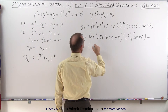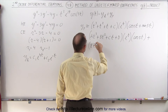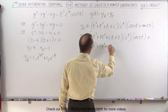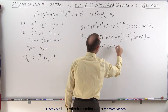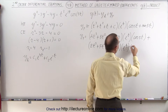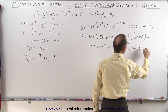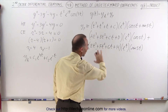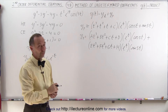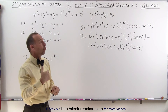So this becomes: e t cubed plus f t squared plus g t plus h, times e to the t power, times the sine of 5t. That means when we multiply all this out we're going to get eight separate terms with eight separate coefficients, and then we have to determine each of those coefficients.